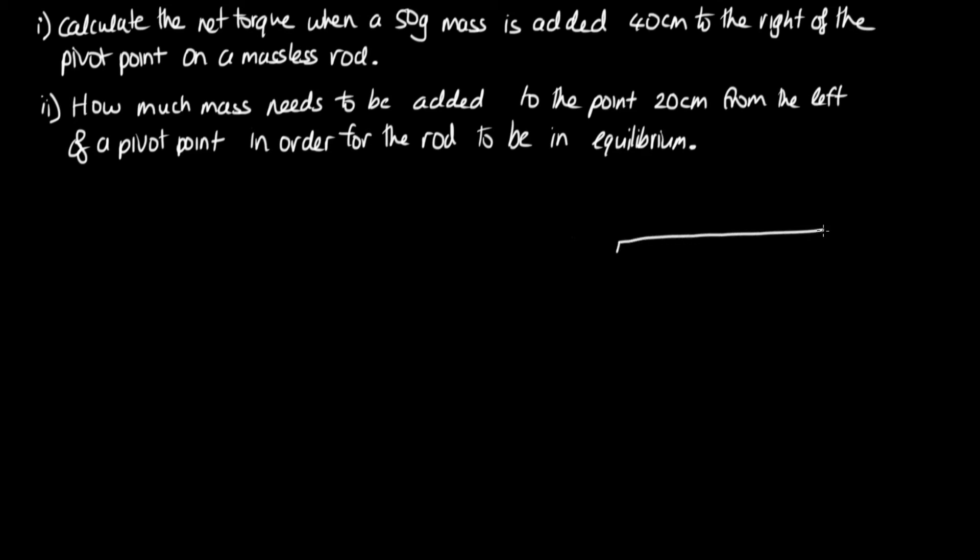Let's start by drawing a diagram. Here's our rod pivoted about the center. If it's pivoted about the center it doesn't actually matter if it's massless or not, as the torque caused by this side will balance the torque caused by this side. What we're told is that we add a 50 gram mass 40 centimeters to the right of the pivot point.